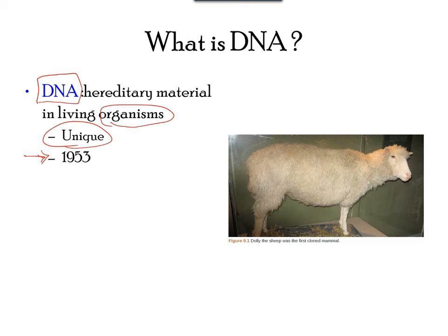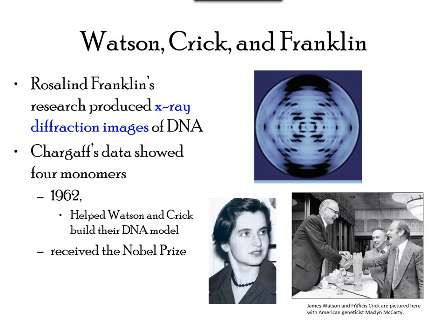Thousands of species have been sequenced for their genome, and many people have been sequenced as well. This slide represents some historical information about the discovery of DNA. In the early 1950s, Francis Crick and James Watson proposed a structure of DNA and were awarded a Nobel Prize. However, their work had contributions from the work of Rosalind Franklin, who produced X-ray diffraction images of DNA that were essential to understanding the double helical nature of DNA.